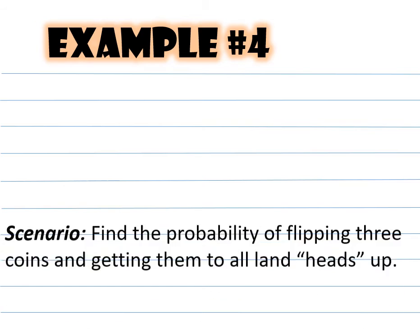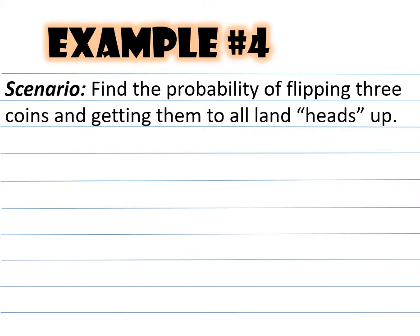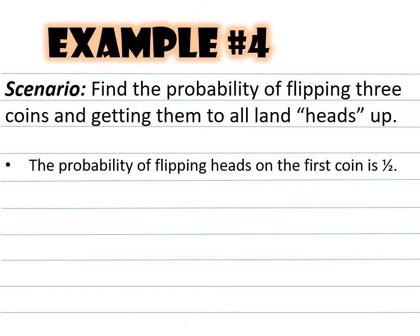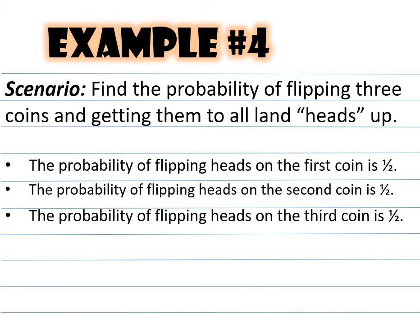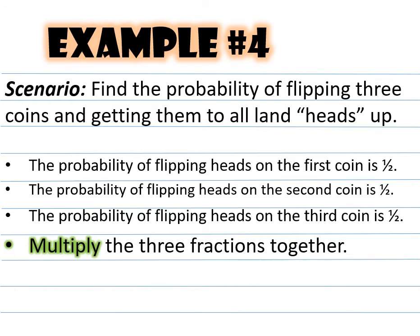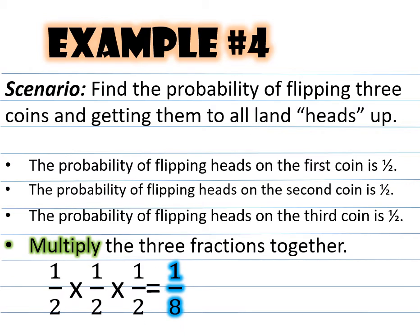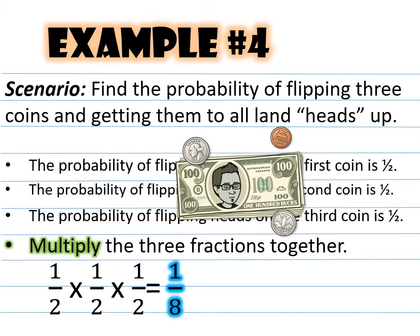Example number four: find the probability of flipping three coins and getting them all to land heads up. The probability of flipping heads on the first coin is 1/2, the same for the second coin, and the same for the third coin. Multiplying 1/2 times 1/2 times 1/2 gives us the answer of 1/8.